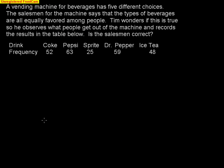Here's our first example. A vending machine for beverages has five different choices. The salesman for the machine says that the types of beverages are all equally favored among people. Tim wonders if this is true. So he observes what people get out of the machine and records results in the table below. Is the salesman correct? We have categorical data. What drink are you getting? Coke, Pepsi, Sprite, Dr. Pepper, iced tea. Not numbers. We have numbers that represent the counts of these things, but it's not an average length of something or the proportion of the number of people that are illiterate.